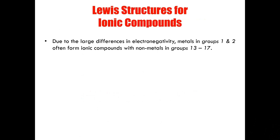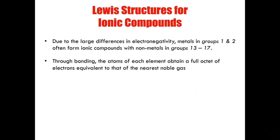Due to large differences in electronegativity, metals in groups one and two often form ionic compounds with nonmetals in groups 13 to 17. This makes sense considering that group one and two metals are very desperate to lose electrons, while group 13 to 17 nonmetals are very keen on gaining electrons to reach stability. Through bonding, the atoms of each element obtain a full octet of electrons equivalent to that of the nearest noble gas — they want to become isoelectronic with the nearest stable element.